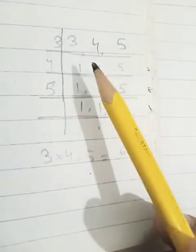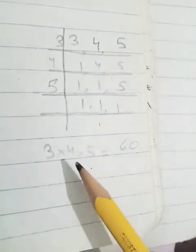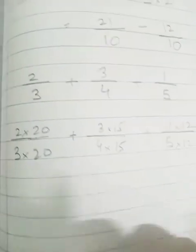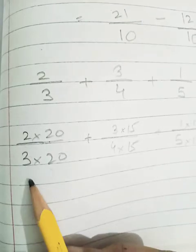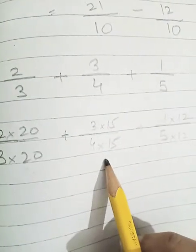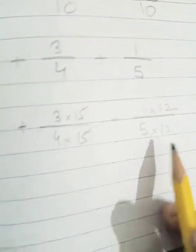3, 4, 5. So here we have taken the LCM of 3, 4, and 5 in this way. 3 multiplied by 4 multiplied by 5 equals 60. So we will make all the denominators 60. Like this. 2 upon 3 will be multiplied by 20 plus 3 upon 4 will be multiplied by 15 plus 1 upon 5 will be multiplied by 12.